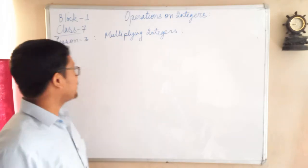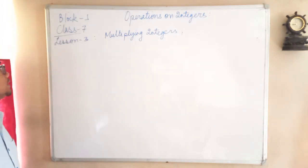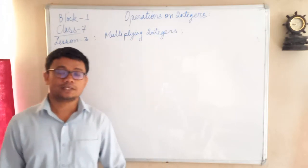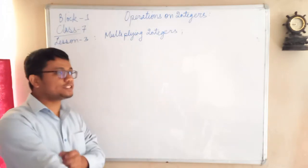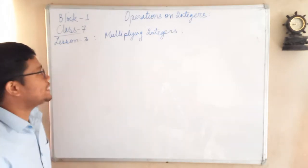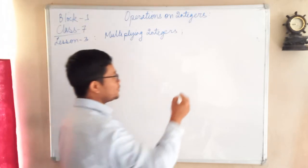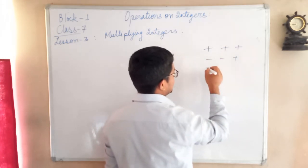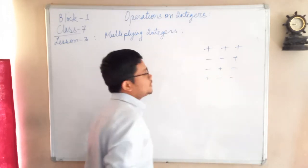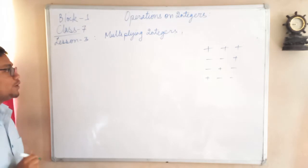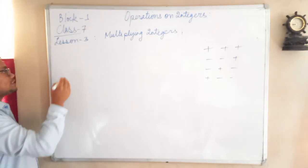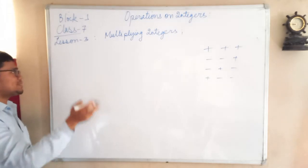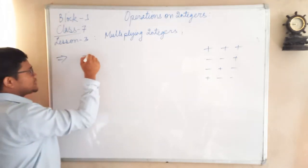Good morning children. Today we are going to discuss the third lesson, which is multiplying integers. You have properly understood how to add and subtract integers. Now in this topic we are going to learn how to multiply integers. You must know the sign convention from the previous class: plus × plus = plus, minus × minus = plus, minus × plus = minus. We are going to use this here as well.